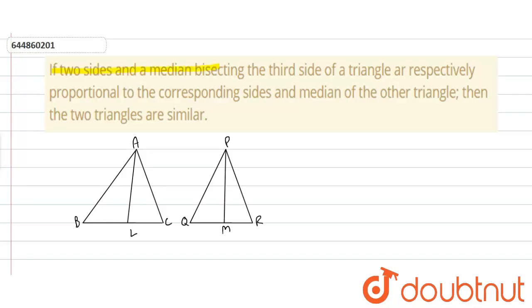The question is: if two sides and a median bisecting the third side of a triangle are respectively proportional to the corresponding sides and median of the other triangle, then the two triangles are similar. From the question we can write